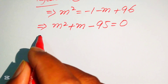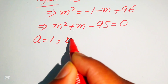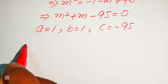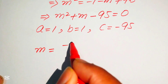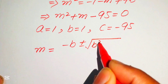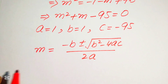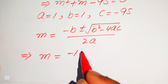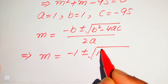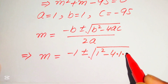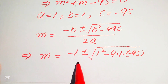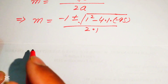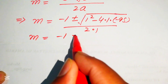We identify the coefficients: a = 1, b = 1, c = -95. The quadratic formula is m = (-b ± √(b² - 4ac)) / (2a). Substituting: m = (-1 ± √(1² - 4·1·(-95))) / (2·1).